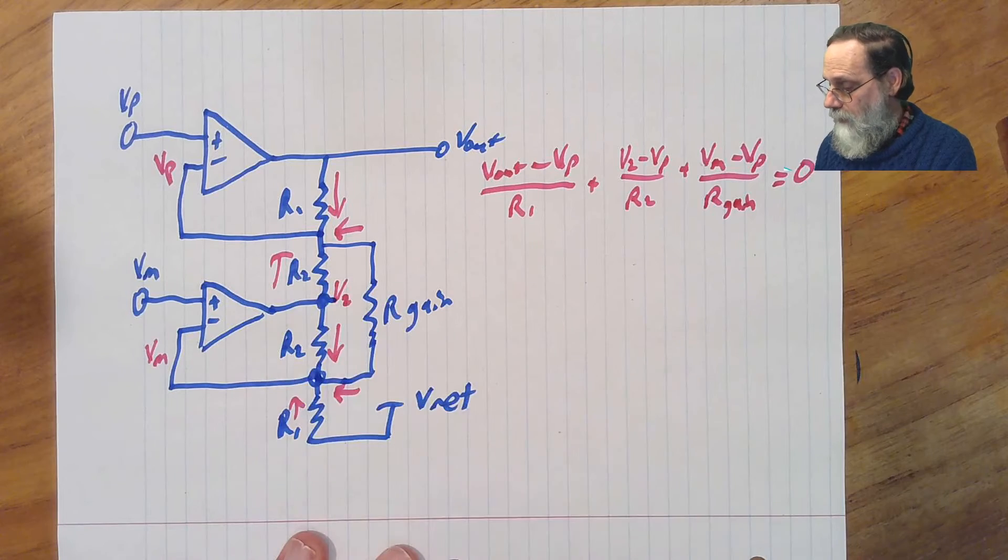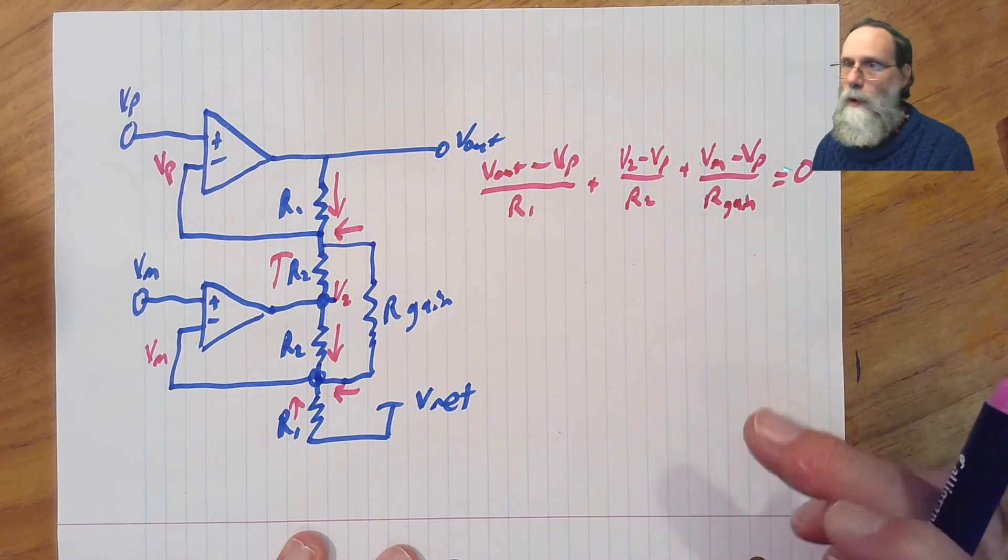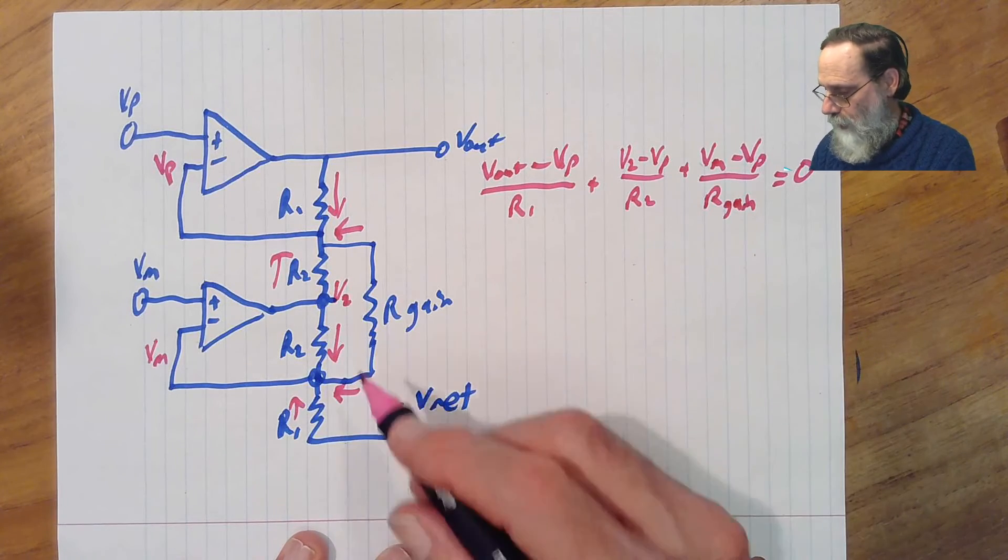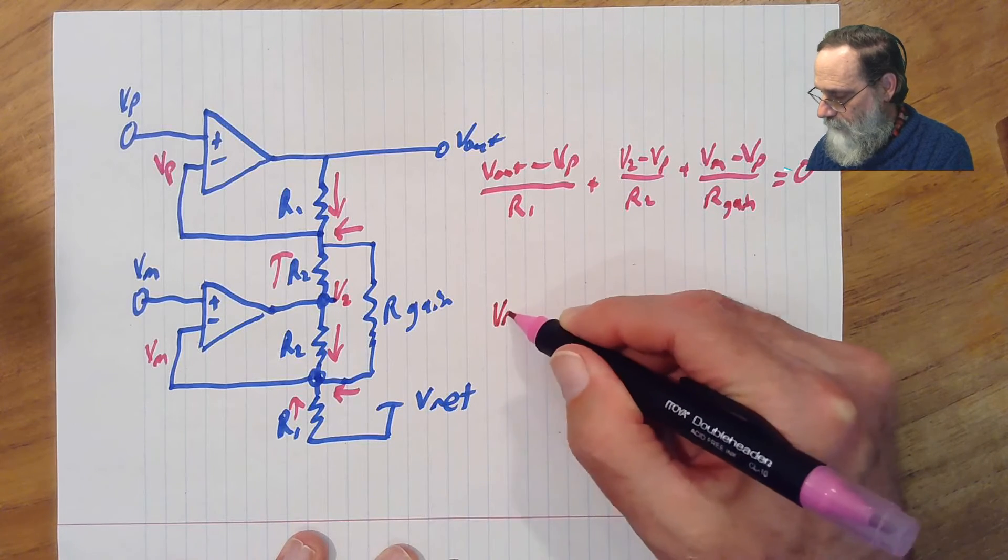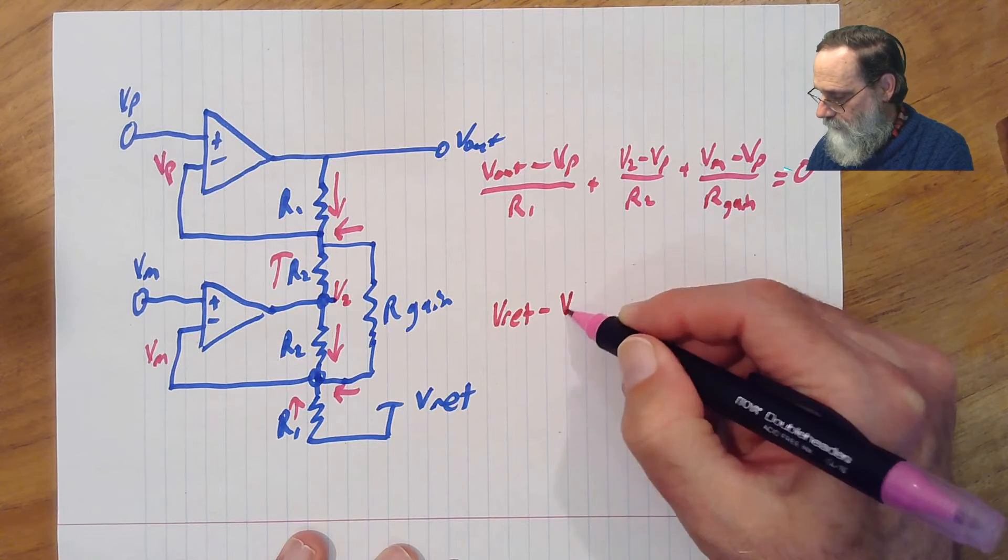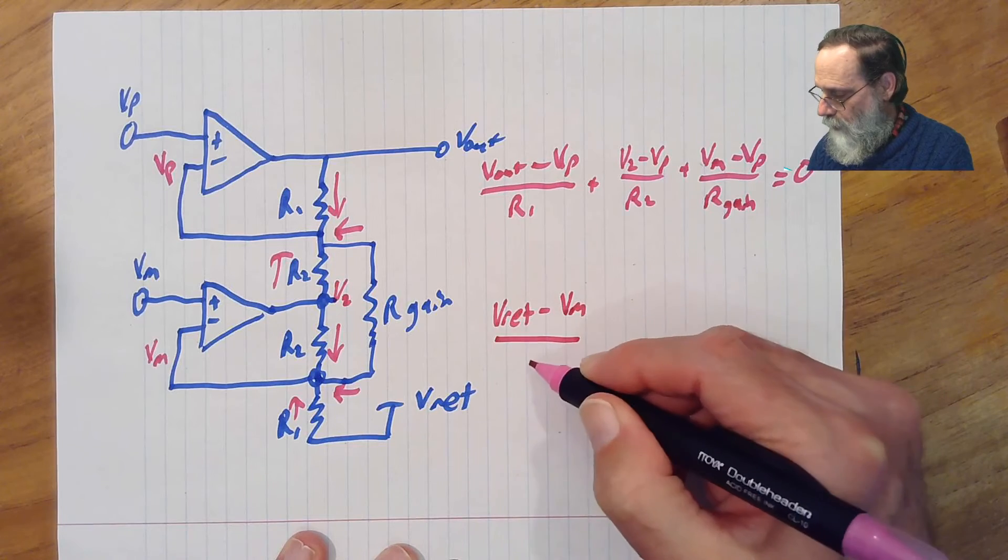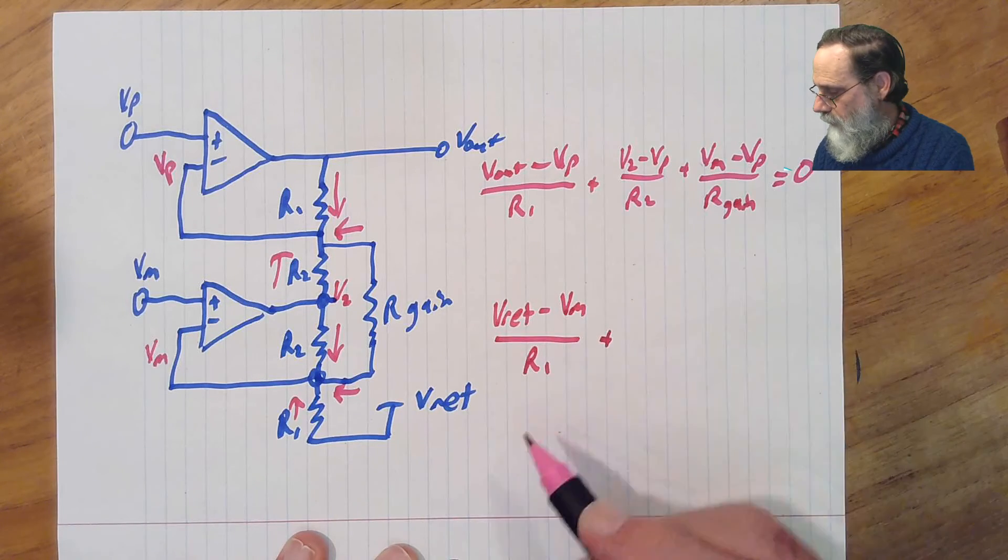And let's do the same thing down here, and let's put them in the same order of the fractions. So we'll do the ones that are for r1 first. That would be vref minus vm over r1 plus, and I guess we had r2 next,